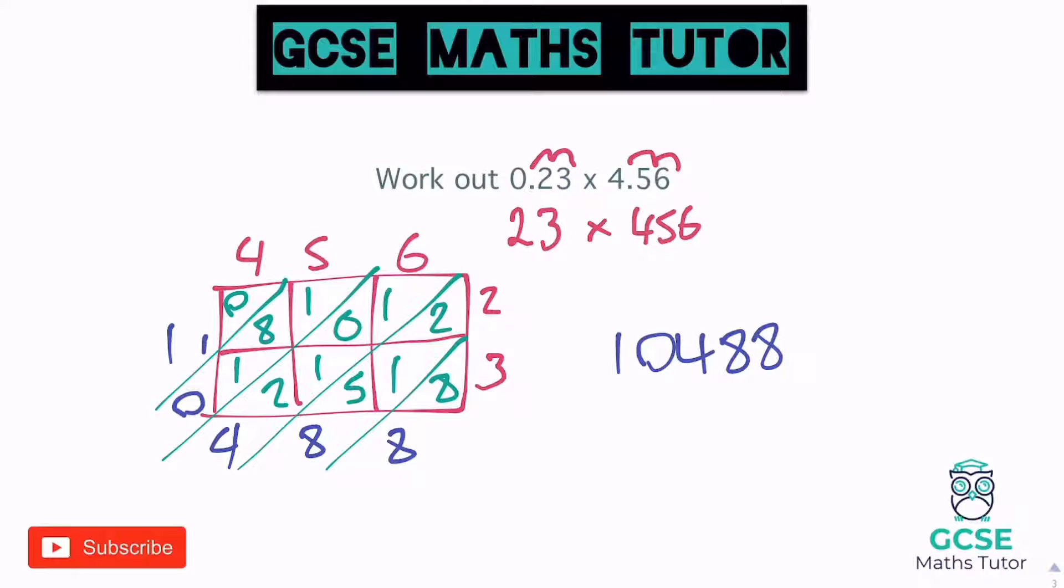And we need to hop that decimal back in. How many jumps was it up there? That was 4 jumps. So 1, 2, 3, 4. Puts it there. So that's 1.0488. Okay, and there's your final answer.